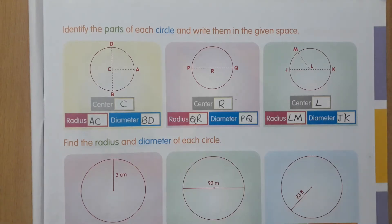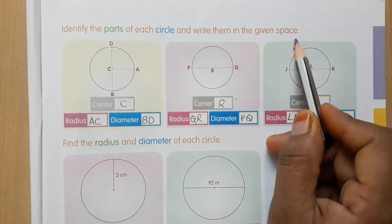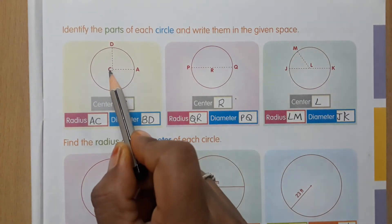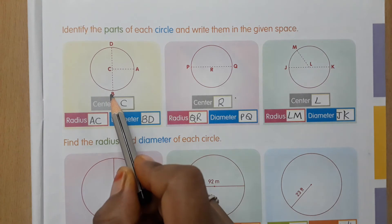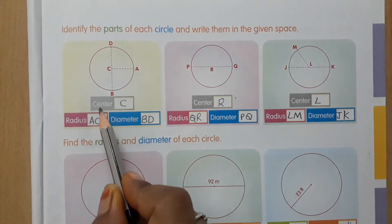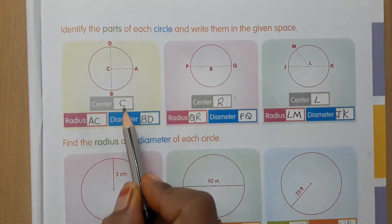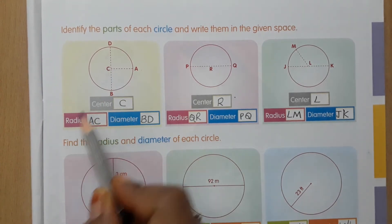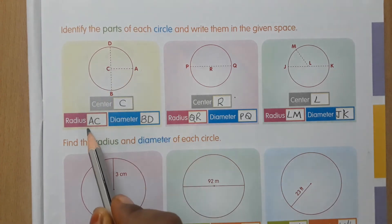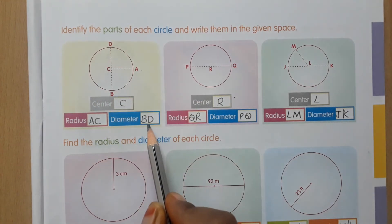Identify the parts of each circle and write them in the given space. In this circle, C is the center, DB is the diameter, and CA is the radius. They are asking: center is C, radius is CA or AC, and BD is the diameter.